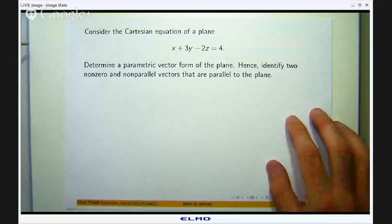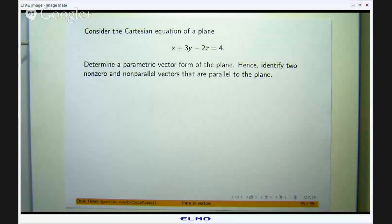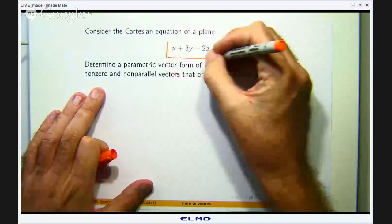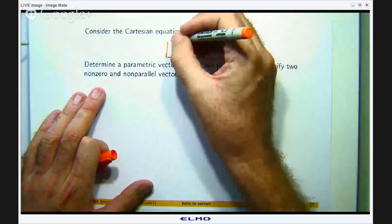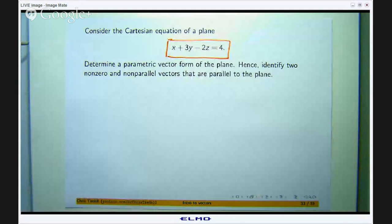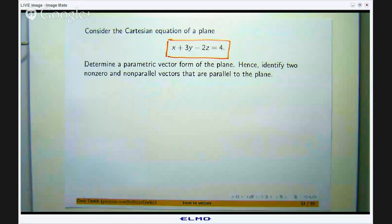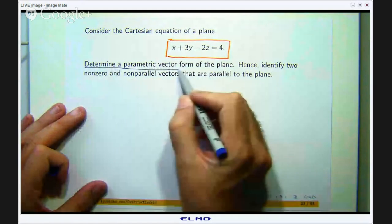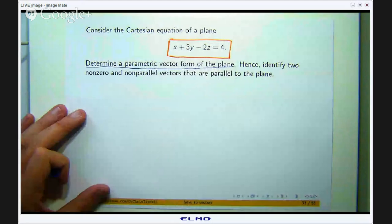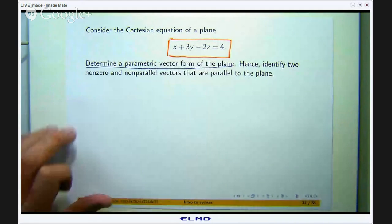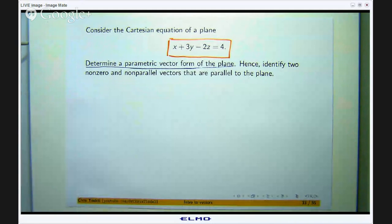So let me share my screen with you and I will show you the example. So here it is, we are given the following Cartesian equation of a plane. I will give you a picture of that in a minute. And we are asked to do two things. So how do we do it?